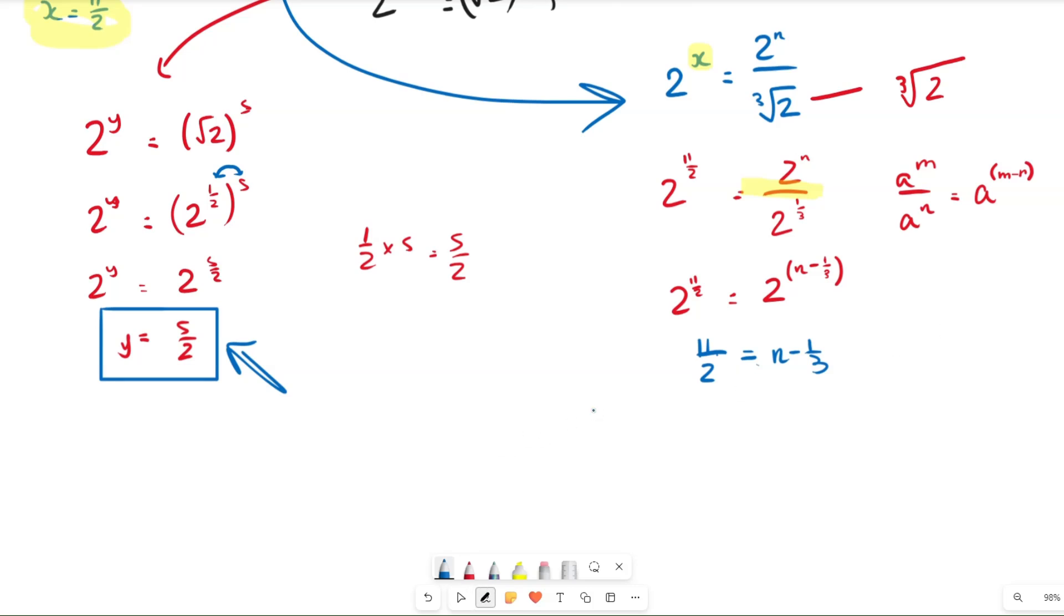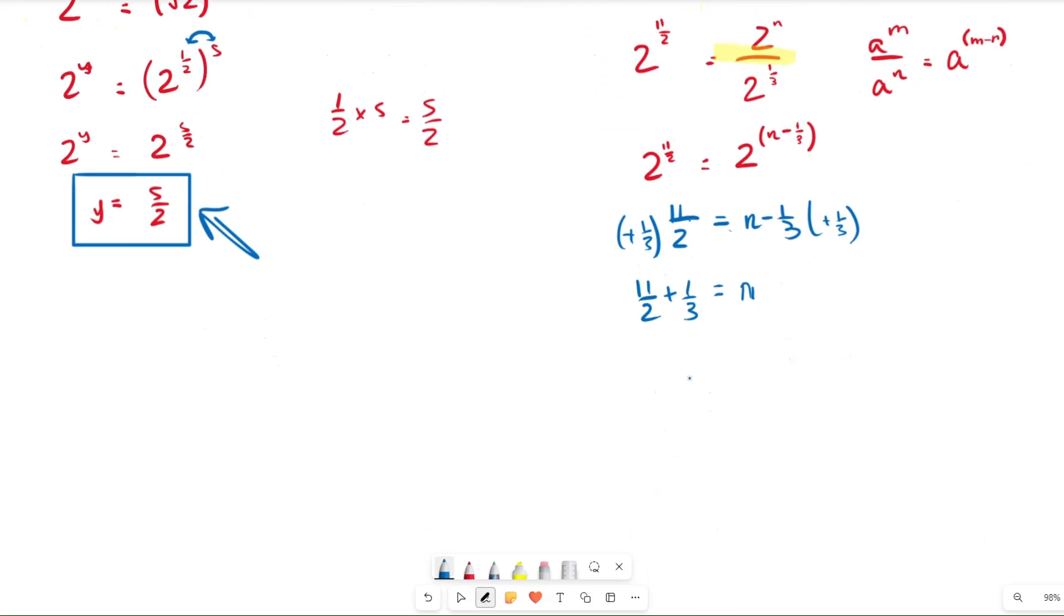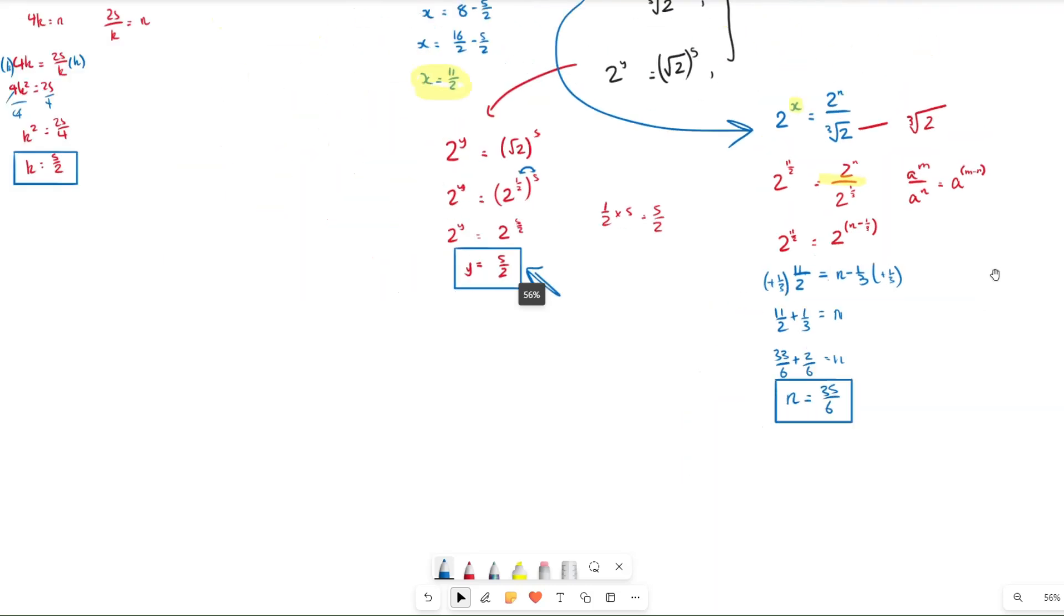So now what we're going to do, we can literally just add a third to both sides. And then we're going to get 11 over 2 plus one third equals n. But then let's just do a little bit of addition. This is going to be 33 over 6 plus 2 over 6 equals n. So therefore, n equals 35 over 6, and that is our final answer for this question.